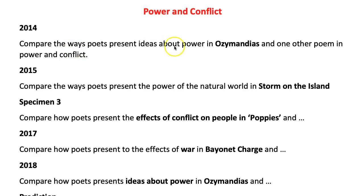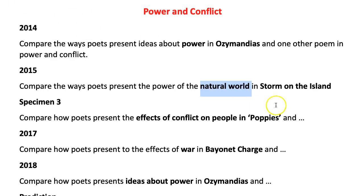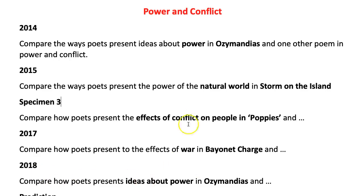The first specimen paper asked us to think about the idea of power — it comes up all the time in Ozymandias — and as you know, you always have to relate it to one other poem from the Power and Conflict section. In 2015 the next specimen paper talked about the natural world and used 'Storm on the Island.' Then there's a third specimen paper which looks at the effects of conflict in 'Poppies' — so that was war, that was the natural world, and that was power. For the first actual exam they went for war again with 'Bayonet Charge,' and then for 2018 they repeated the theme of power from the 2014 specimen paper.